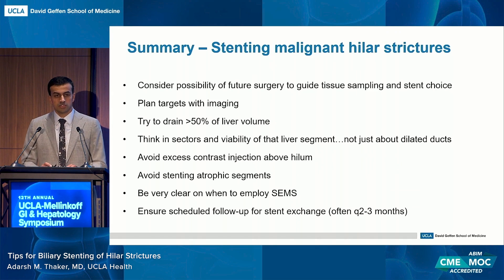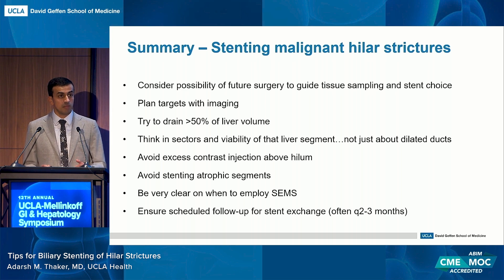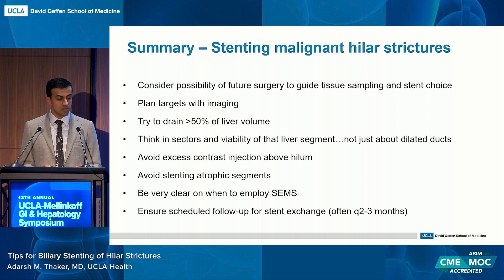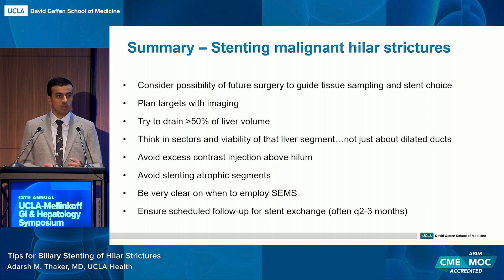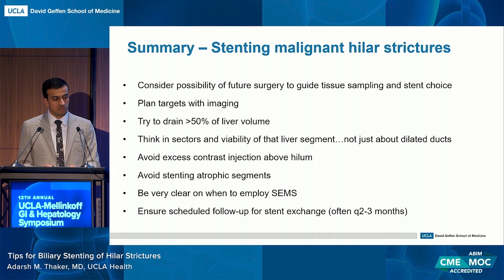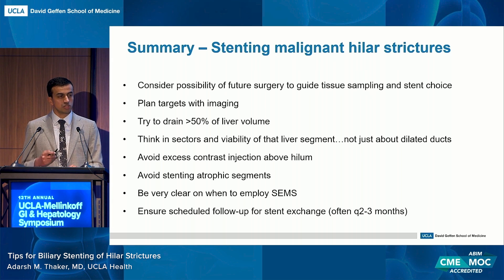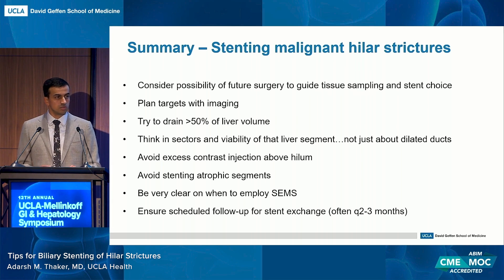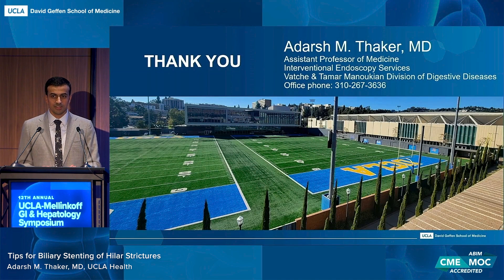In summary, when attacking a malignant hilar stricture: first and foremost, consider the possibility of future surgery to guide tissue sampling and to avoid placing permanent metal stents in a liver that may undergo surgery. Plan targets with imaging, with the goal of draining at least 50% of liver volume — think in terms of three sectors: left, right anterior, right posterior — targeting viable liver and avoiding non-viable segments. Avoid excess contrast injection above the hilum and avoid atrophic segments to reduce cholangitis risk. Have a shared discussion with the patient about self-expanding metal stents. If using plastic stents, have a follow-up plan for stent exchanges, typically every two to three months at our institution. Thank you very much.